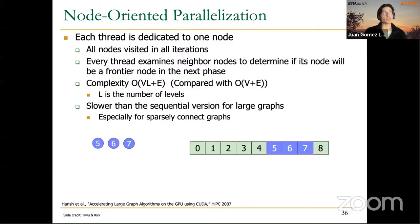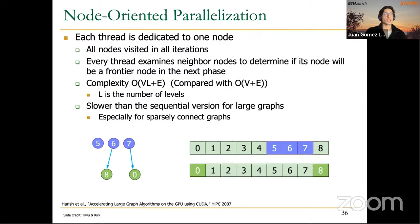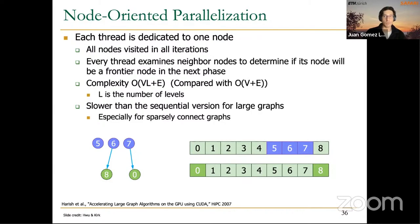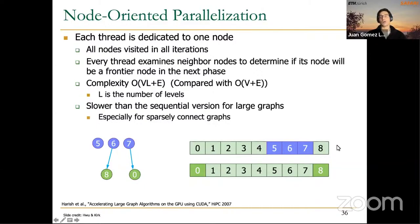This implementation might work well for specific graphs — maybe not too large, or not too dense — where nodes usually have many neighbors. In those cases, we will probably have much better utilization of threads. But that's probably not the general case.